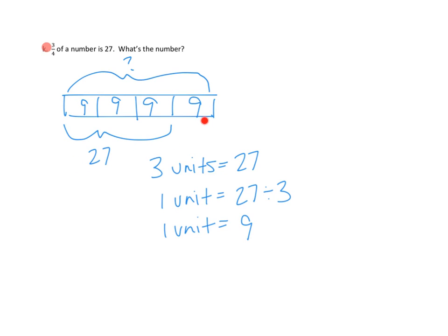I know how big our fourth unit is because of the exact same size. 9, 9, 9, 9. And now I think I have enough to tell you what the whole is. It's 9 plus 9 plus 9 plus 9. Another way of saying that is four units equals 4 times 9, or 36. So I think our number that we originally had was 36.